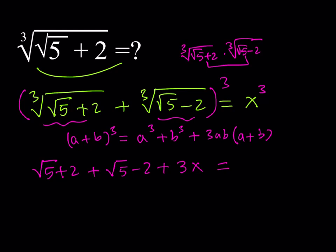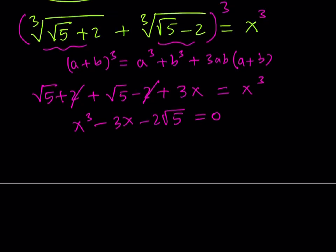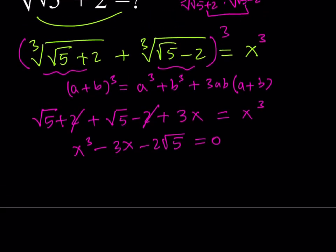What is this equal to? Remember it's equal to x cubed. The 2s cancel out, and we get the equation x cubed minus 3x minus 2 root 5 equals 0. One of the solutions of this equation is x equals root 5. The other solutions are complex, so we don't care about them.